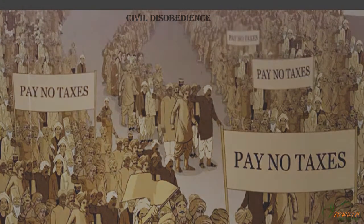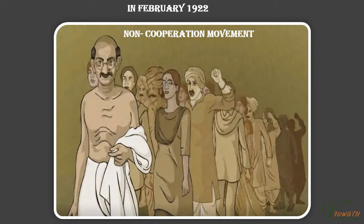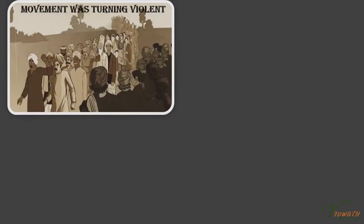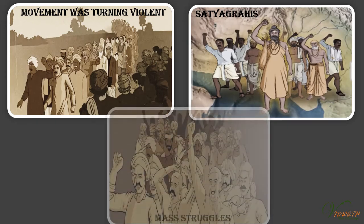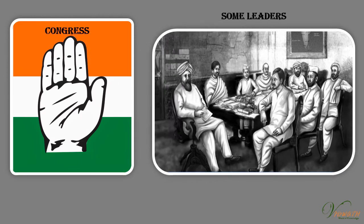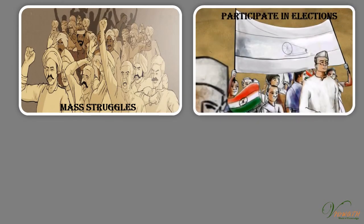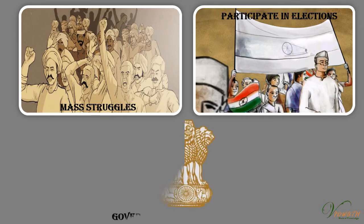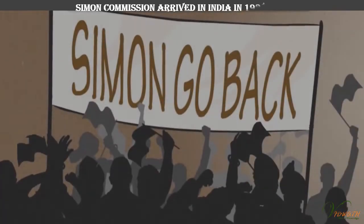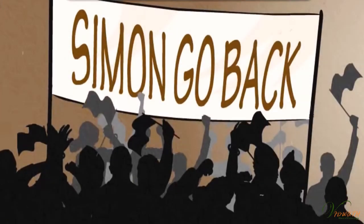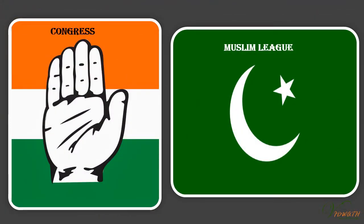In February 1922, Mahatma Gandhi decided to withdraw the non-cooperation movement, feeling the movement was turning violent and Satyagrahis needed proper training before mass struggle. Within the Congress, some leaders were tired of mass struggles and wanted to participate in elections to the provincial councils set up by the Government of India Act of 1919. When the Simon Commission arrived in India in 1928, it was greeted with the slogan 'Go Back, Simon.' All parties, including the Congress and the Muslim League, participated in the demonstrations.